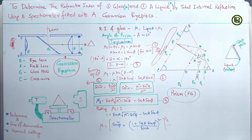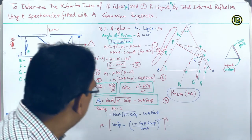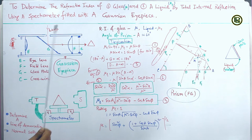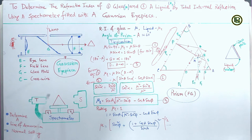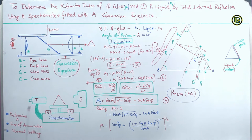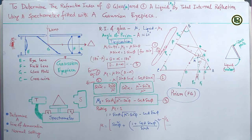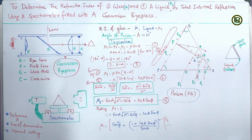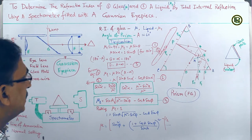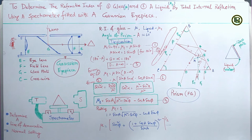Now I come to the schematic of the experimental setup. We have a spectrometer with a telescope and a source of monochromatic light such as a sodium vapor lamp. On top of the prism table we place the prism. We have two verniers V1 and V2 for measurement of the angle phi. First of all, we have to measure the angle of the prism in the usual laboratory technique.